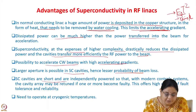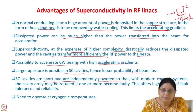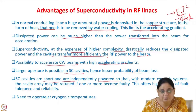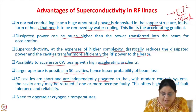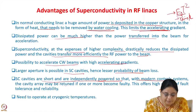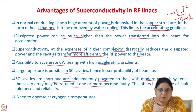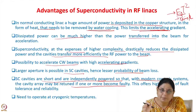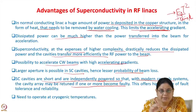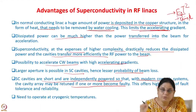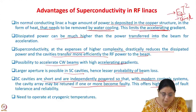Superconducting cavities are short and independently powered. Since the accelerating gradient is high, the same acceleration achievable in a normal conducting cavity can be reached in a smaller length. With modern control systems, the cavity array may be retuned if one becomes faulty. Superconducting cavities are made in small modules, each independently powered. If one module or cavity fails, the fields of adjacent cavities can be adjusted so the accelerator need not shut down, offering a high degree of fault tolerance and reliability.